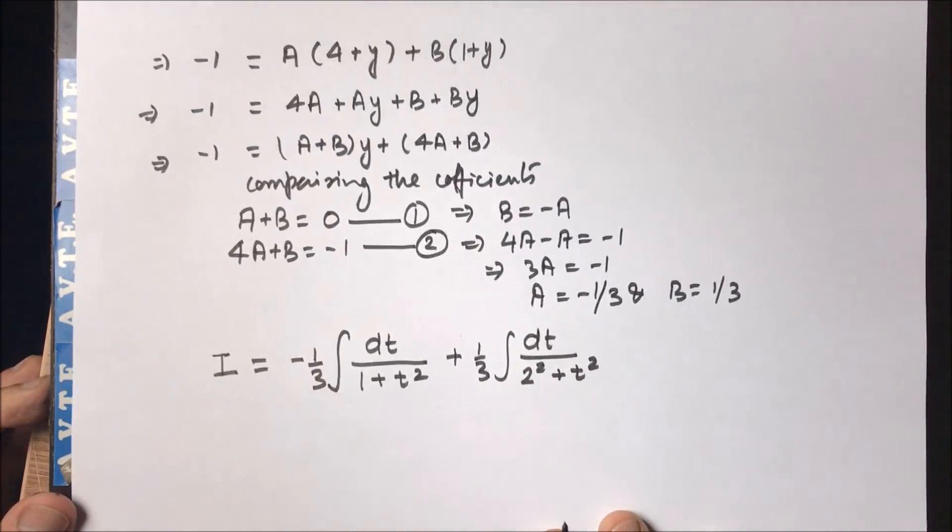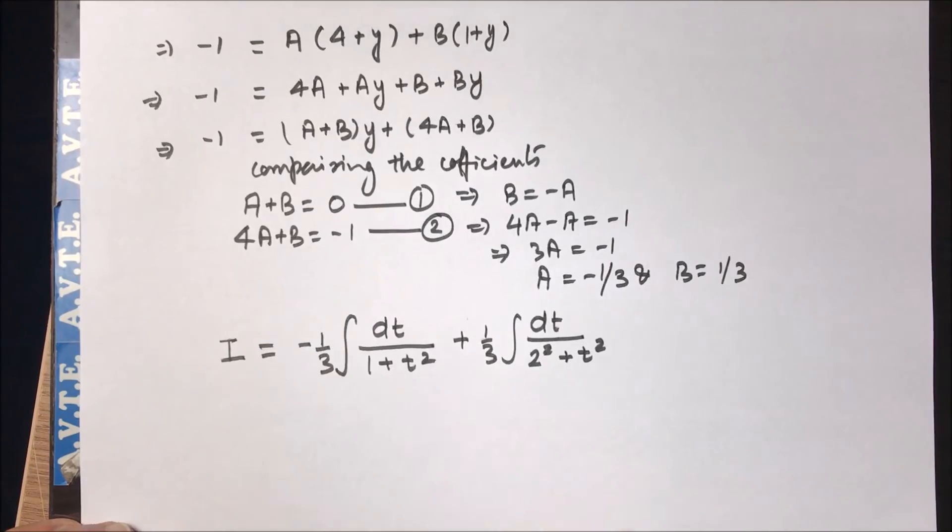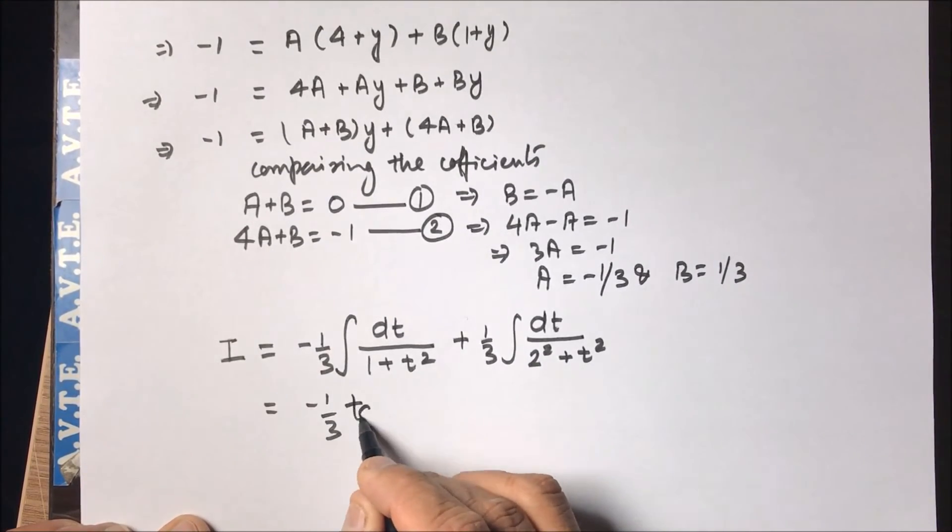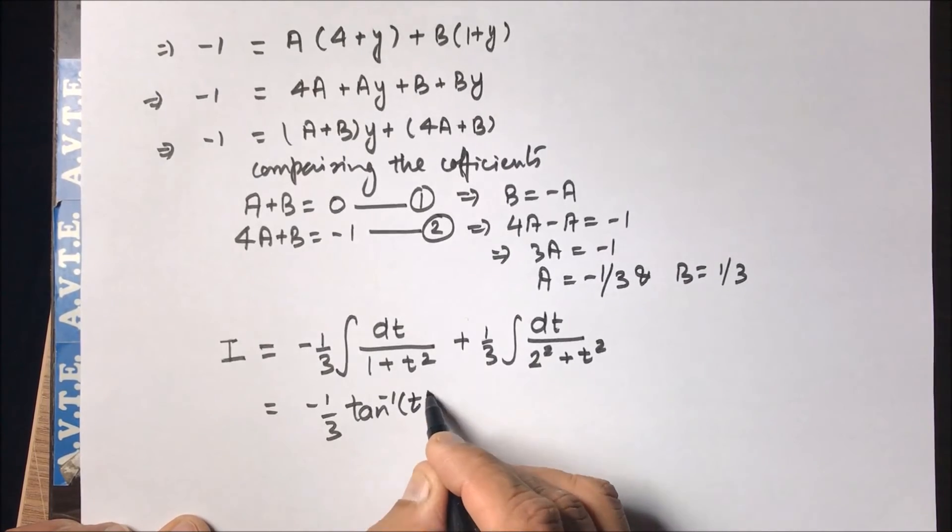Now what is the integration of one upon one plus x square? So this is minus one by three tan inverse of t. The integration of one upon one plus x squared is tan inverse of x, so one upon one plus t square will be tan inverse of t.